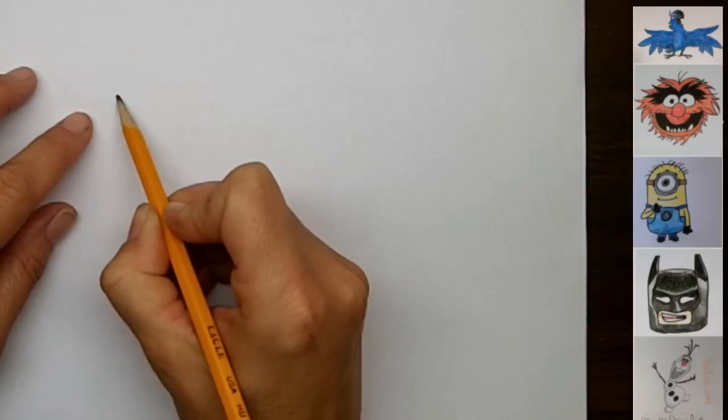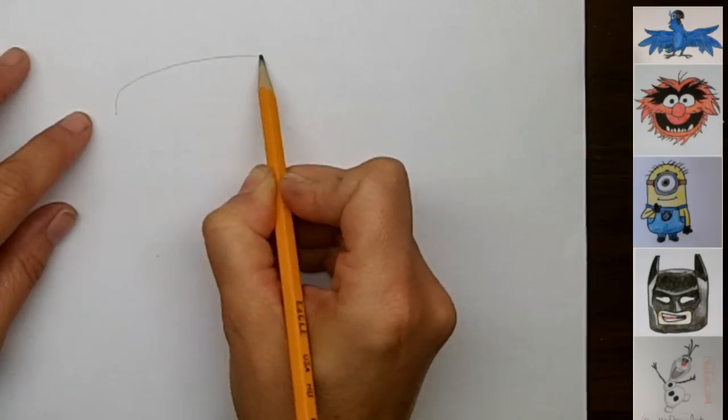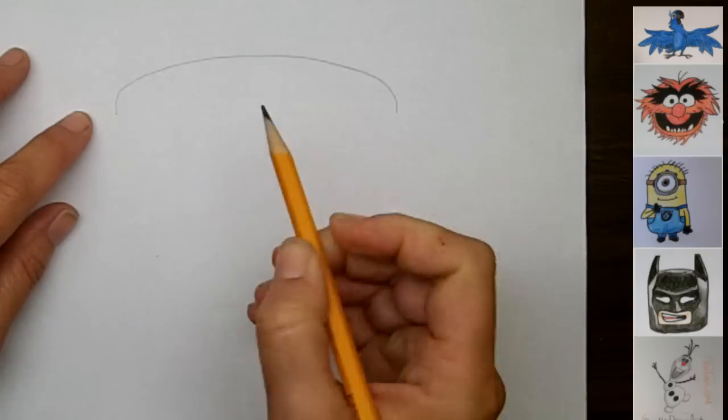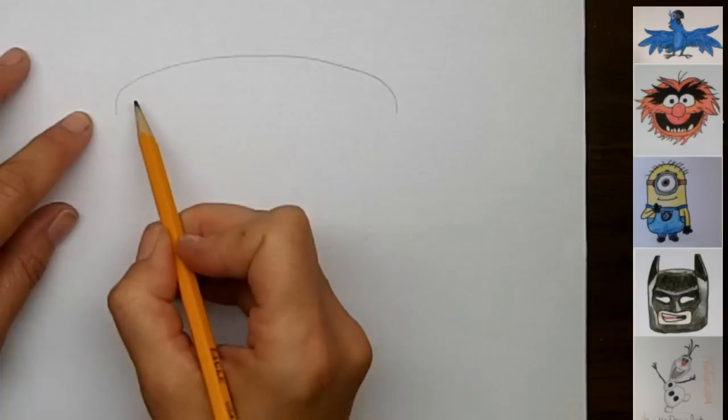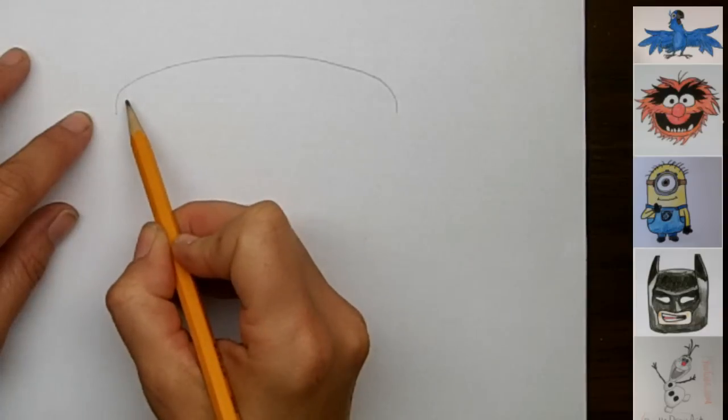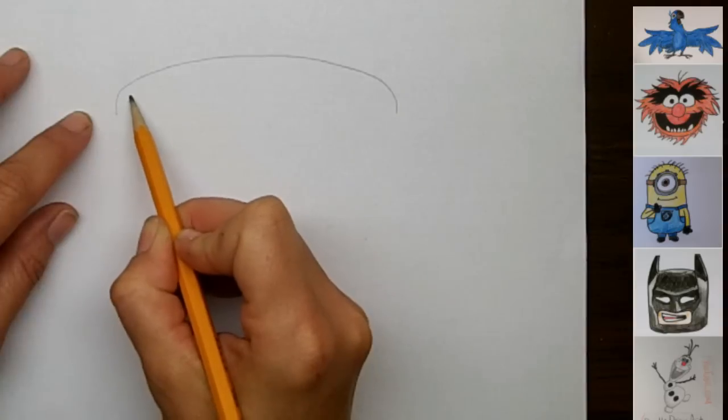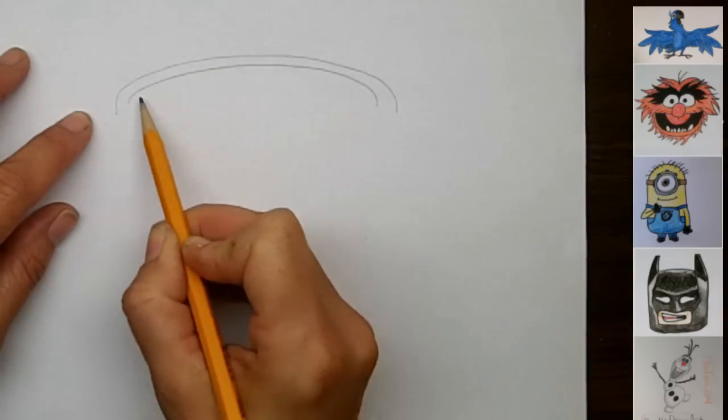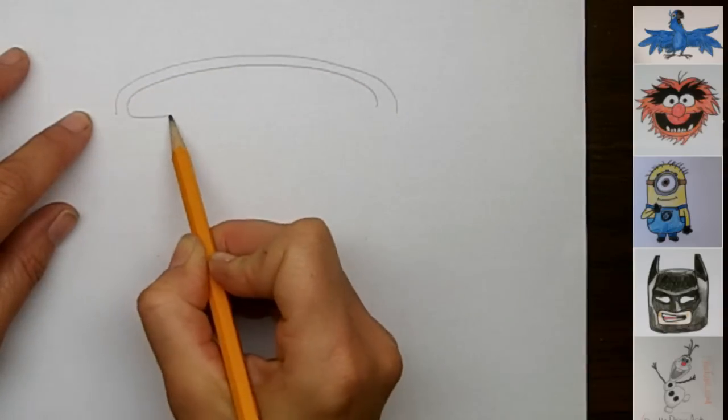I'm going to draw the top of the bus right here, it's a bit rounded, up and over, and then down. And then we're going to draw the section in here where it says what this vehicle is. So another oval shape, just inside here, comes around like this, and down and across.